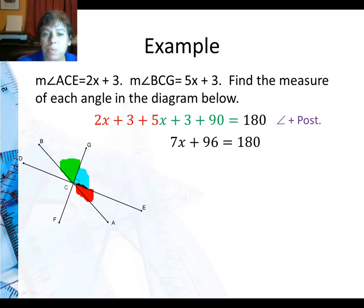That's using the angle addition postulate. Combining my like terms, and you'll have to excuse the colors, for some reason my PowerPoint is acting funny. And I try to do this in red, and that in green, and that in blue. And I didn't like it. So I combine my like terms 7x plus 96 equals 180.